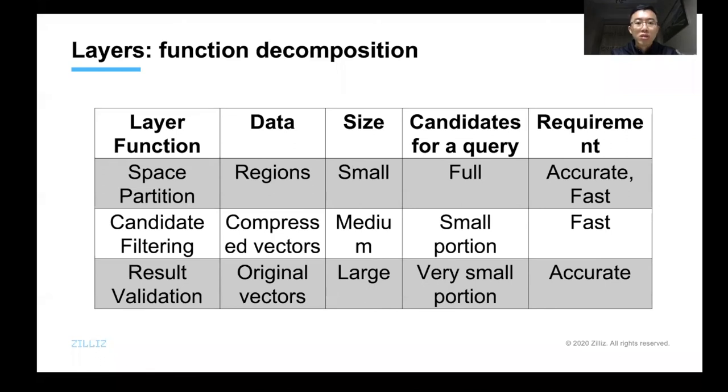In our design, the framework contains three layers with different functions. Each layer can work independently and we can optionally remove one or two layers according to the requirements of users. The first layer is responsible for space partition. It divides the vectors into multiple regions. In the search procedure, it finds the target regions that are close to the query vector.